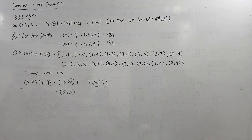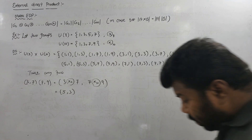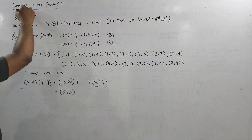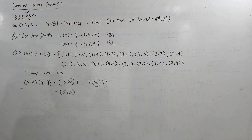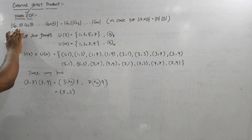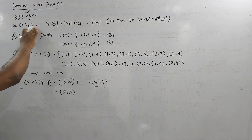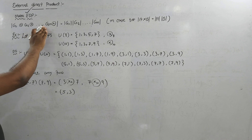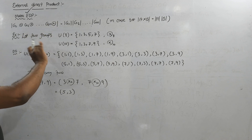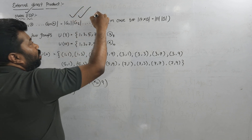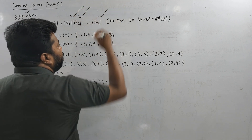The next example is the order of the external direct product. The order of G1 ⊕ G2 ⊕ G3 ⊕ ... ⊕ Gn is equal to |G1| times |G2| times ... times |Gn|.